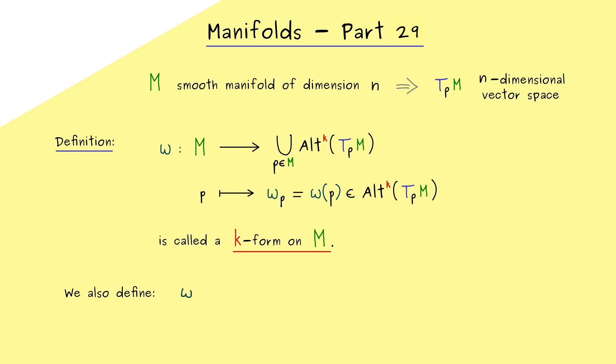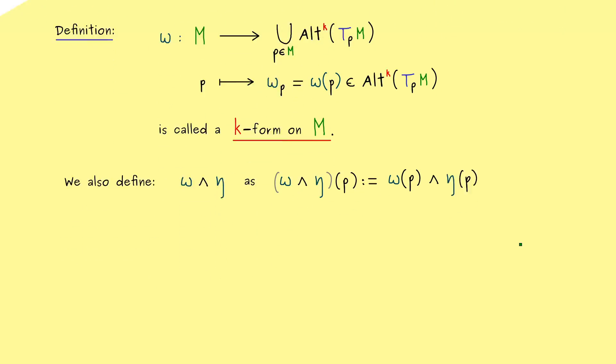And then it's also not surprising that we can also extend the wedge product. So here we can define omega wedge eta as a k-form on M. And as you might already expect, we can do this pointwise. This means we just put in a point p and then we use the ordinary wedge product for k-forms. So we have omega of p wedge eta of p. Therefore, if omega is a k-form on M and eta an s-form on M, then omega wedge eta defines a k plus s form on M. So you see, we can easily reuse all the definitions for multilinear algebra.